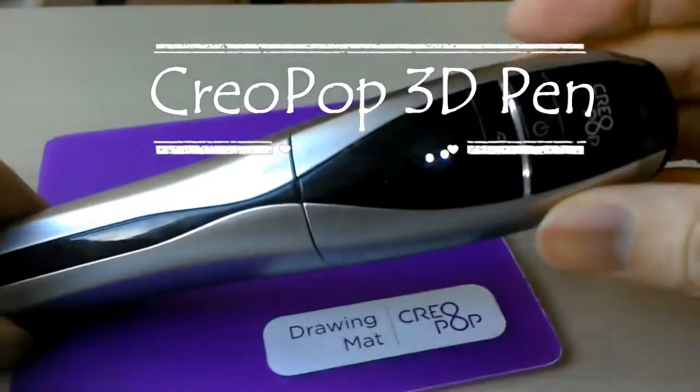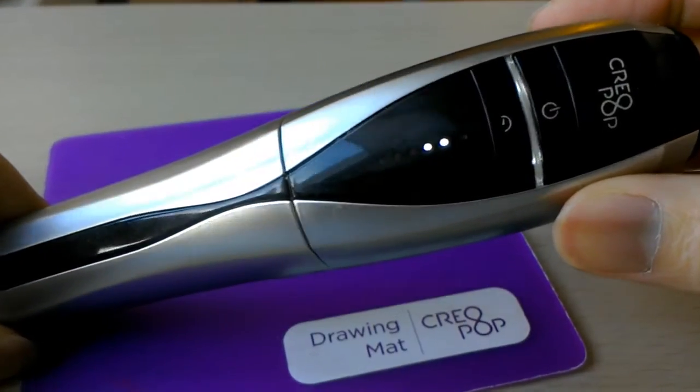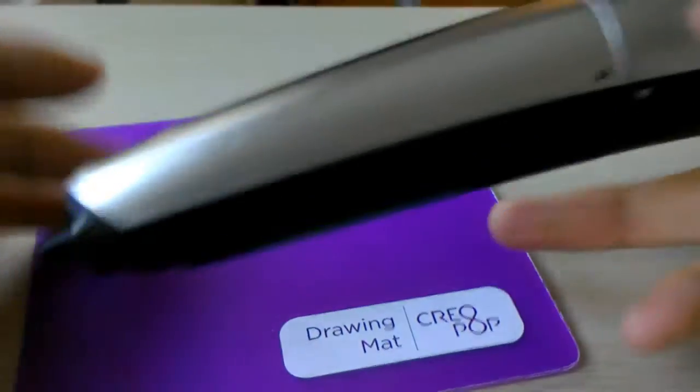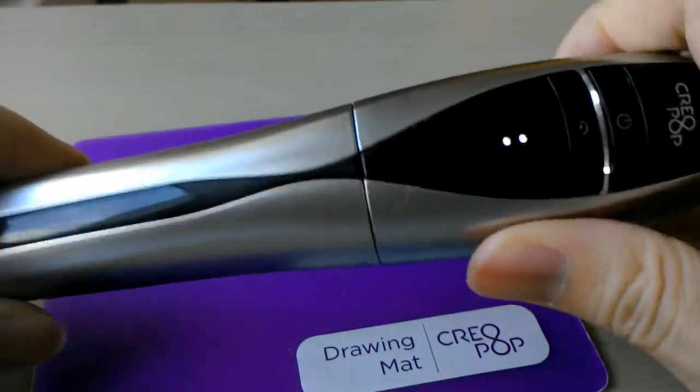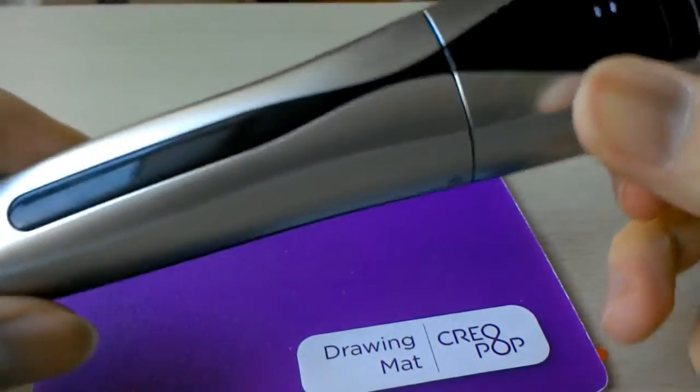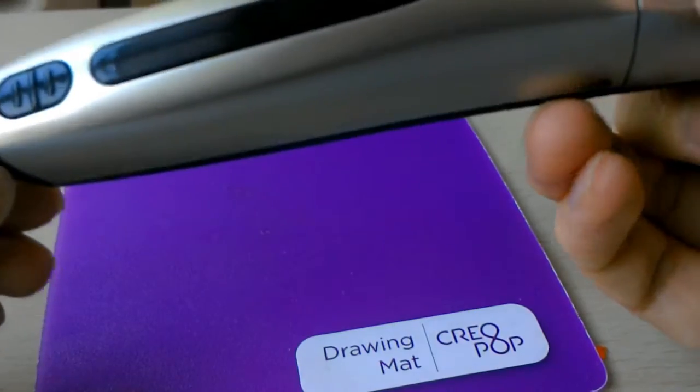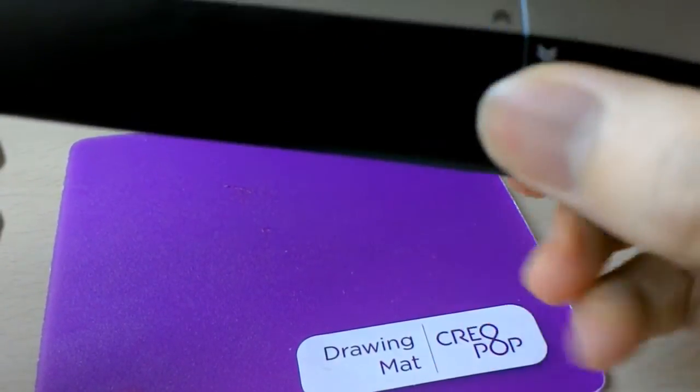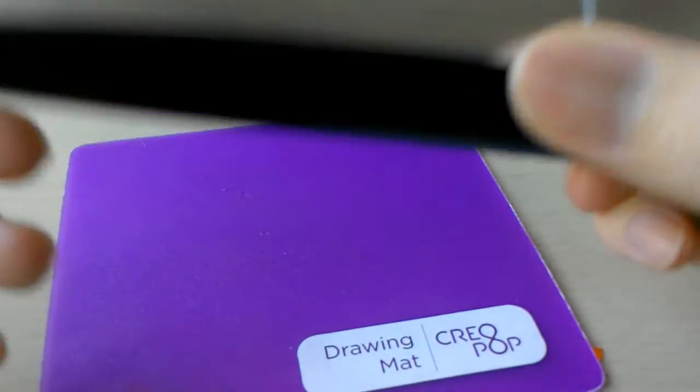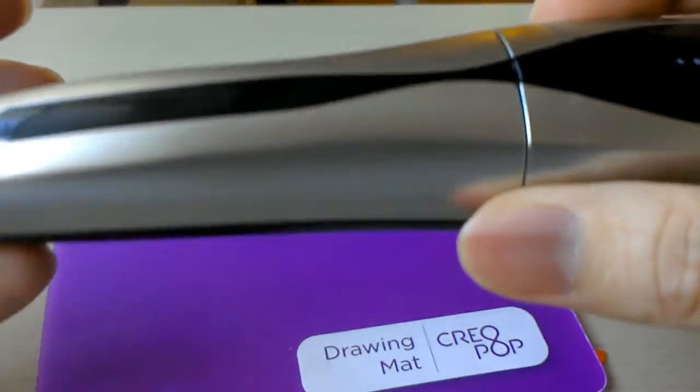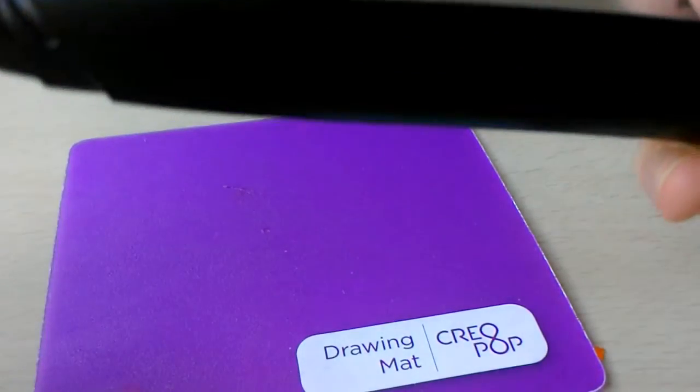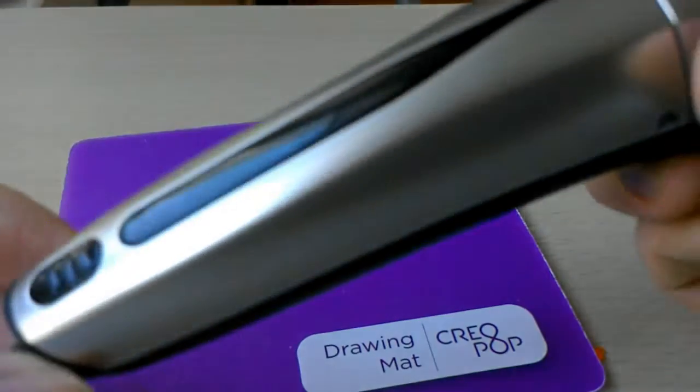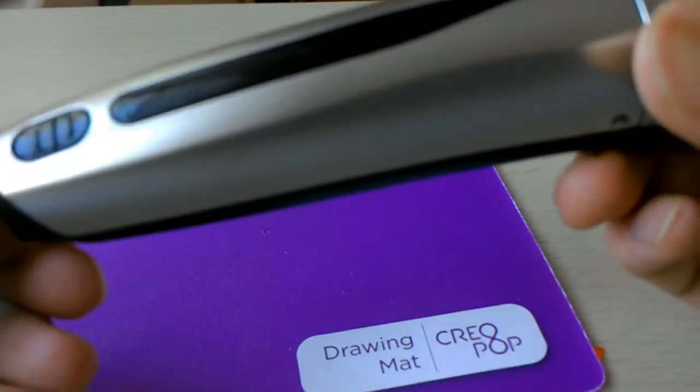Hello, this is Creopop 3D pen and I'm going to show a bit about this pen today. I think most 3D pens use some sort of plastic material as its ink and they melt plastic with heat, so the tip of the pen usually gets really hot and you might burn yourself. Melting plastic has a horrible smell.